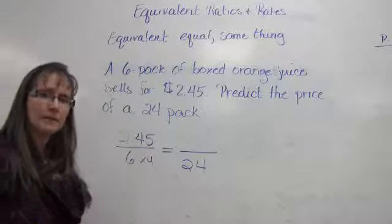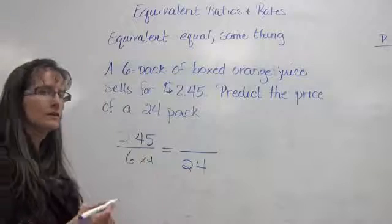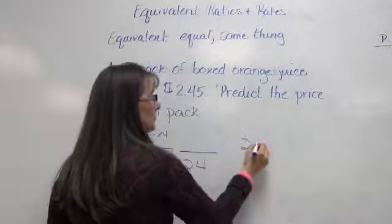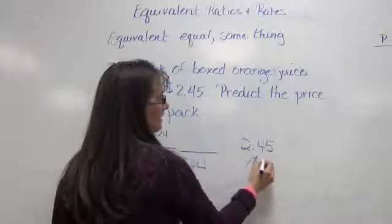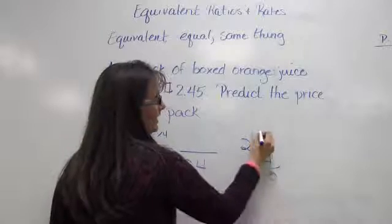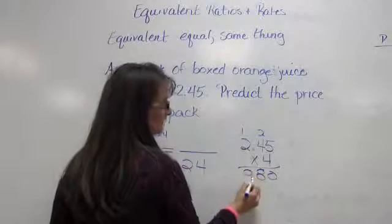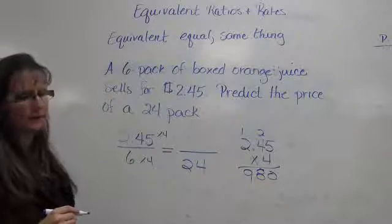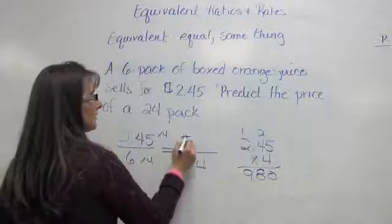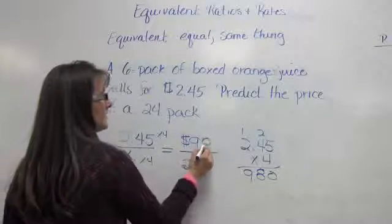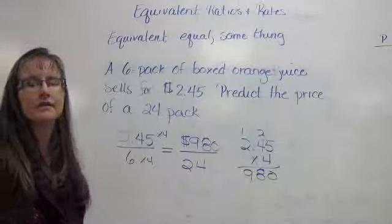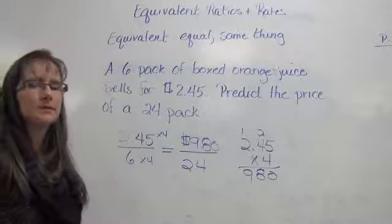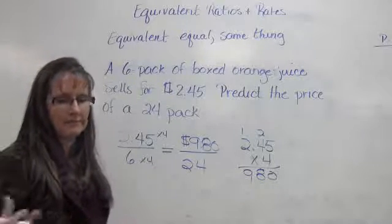And whatever I do to the denominator, I must also do to the numerator. So that means that I am going to multiply $2.45 times 4. And when I do that math, I discover that a 24-pack is going to cost $9.80. Well, of course, I have enough money. I brought $30 with me. But this is an example of when you might need something like this, be able to do this skill out in the real world.